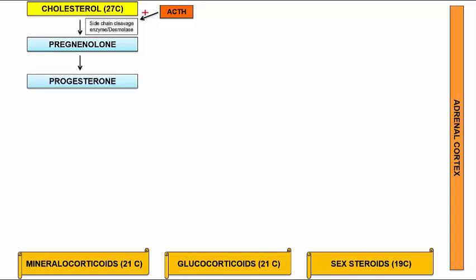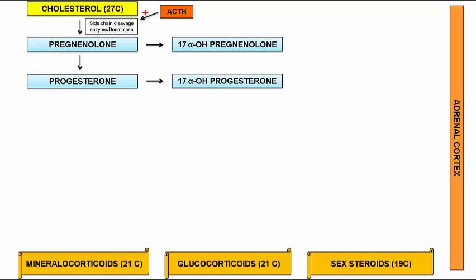In the next step, pregnenolone is converted to progesterone. Moving horizontally, we observe the 17-alpha hydroxylation reaction: hydroxyl groups are added at the 17-alpha position, converting pregnenolone to 17-alpha hydroxypregnenolone and progesterone to 17-alpha hydroxyprogesterone. The enzyme catalyzing these reactions is 17-alpha hydroxylase.